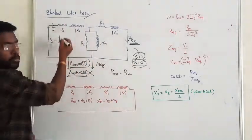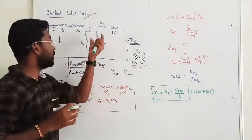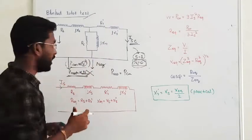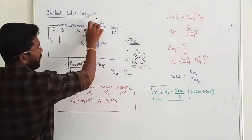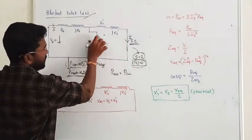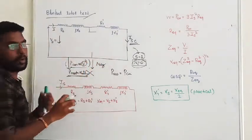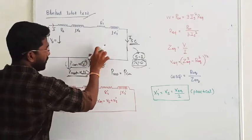Stator winding, rotor winding resistance. The resistance, the copper loss. We are neglecting core component since the applied voltage is very very less. Magnetizing current, we can neglect these two components.